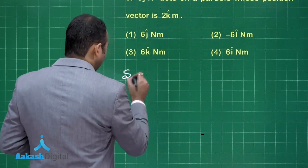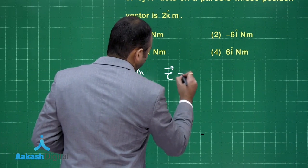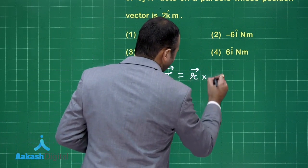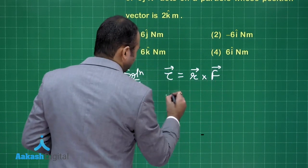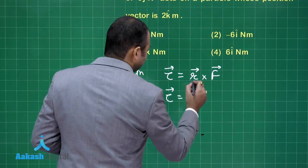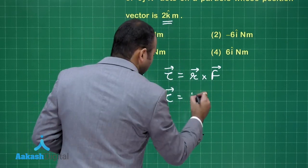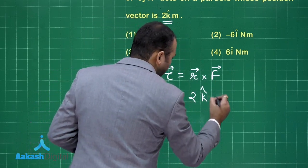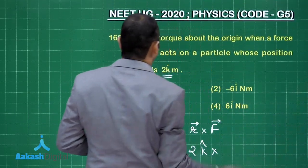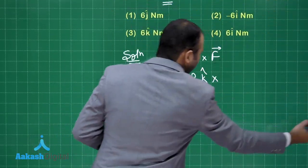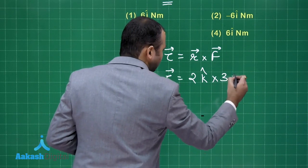Let's write it down. So torque is given by R vector cross F vector. Torque equals, this R is given as 2k cap cross what is the force, that is 3j cap. So what we write here is 3j cap.